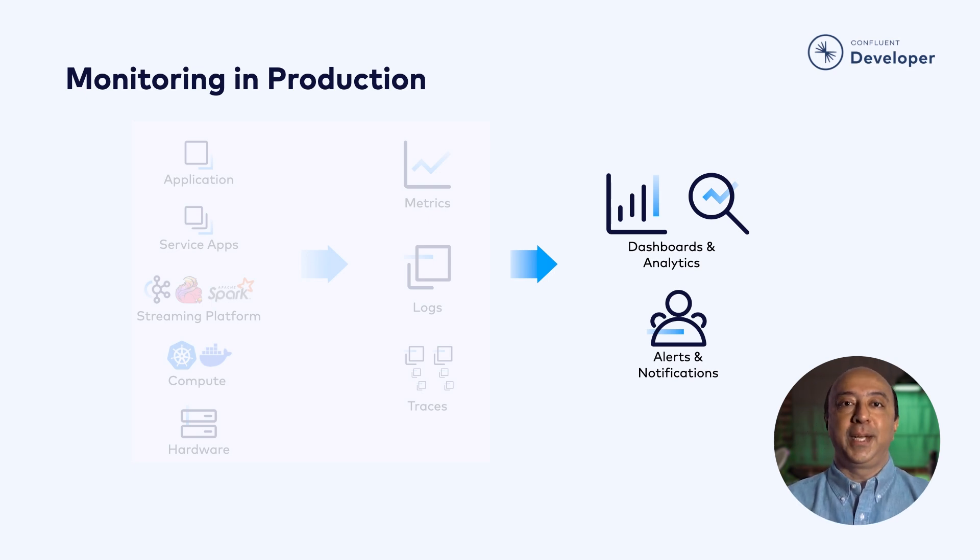I'm looking at Knight Capital with $440 million lost in 30 minutes. Thank you for watching. I hope you found this information useful and learned some new tech. Please feel free to share your thoughts via YouTube comments, the feedback button on the Confluent Developer site, or get in touch on the Confluent Community Slack. Take care, and I'll see you on the next one.